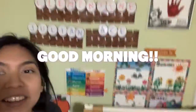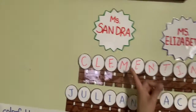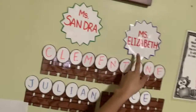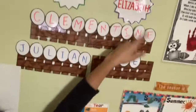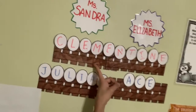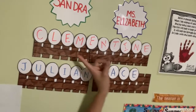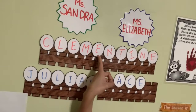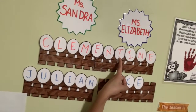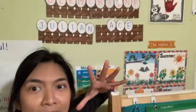Good morning! We're going to say good morning to Miss Sandra. Good morning! Then we're going to say good morning to Miss Elizabeth. Good morning, Miss Elizabeth! Then we're going to say good morning to Clementine. This is her name — let's count how many letters Clementine has. She has one, two, three, four, five, six, seven, eight, nine, ten. Whoa, she has ten letters in her name!